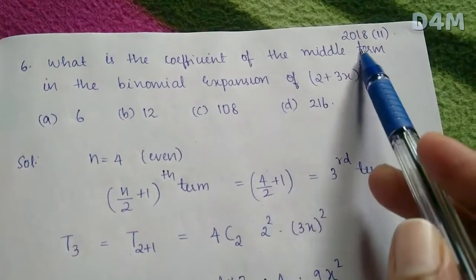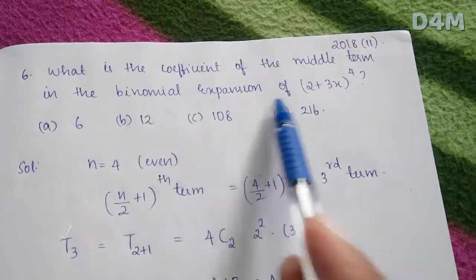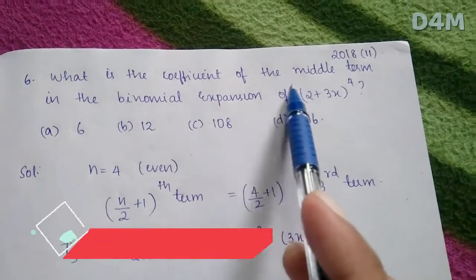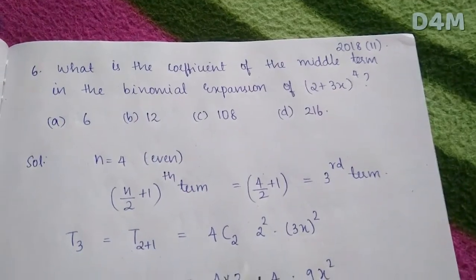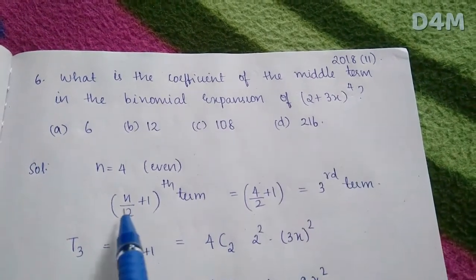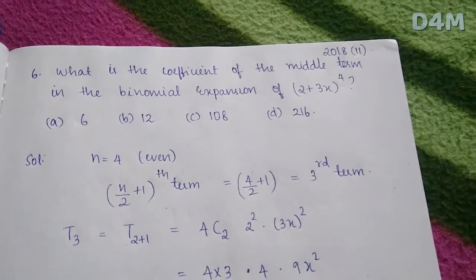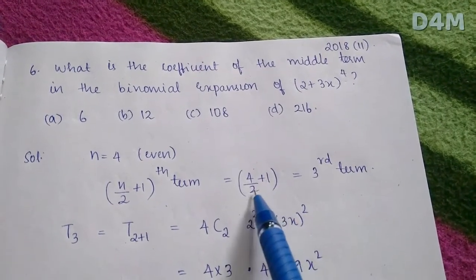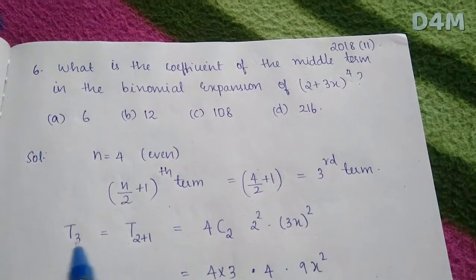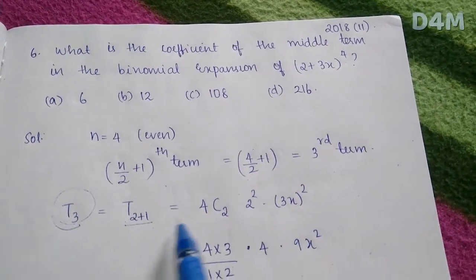The sixth question is from 2018 NDA: What is the coefficient of the middle term in the binomial expansion of (2 + 3x)⁴? Here n = 4, which is even. The middle term is the (n/2 + 1)th = 3rd term. So T3 = 4C2 · 2² · (3x)².